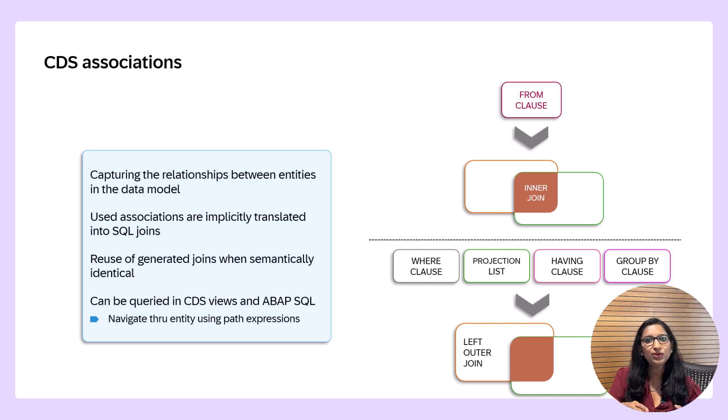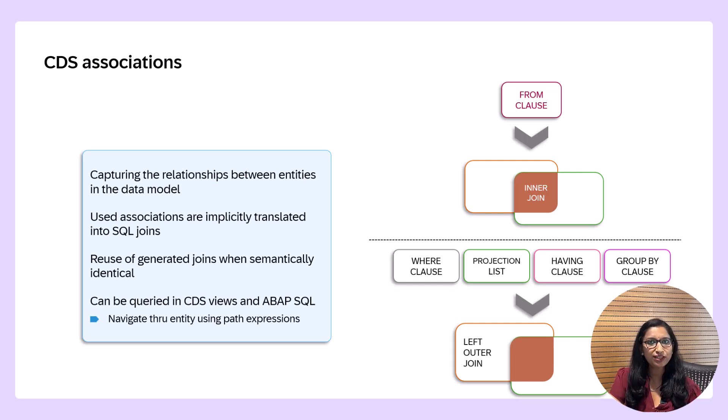The highlight of association is that only when the association is used, it implicitly translates into a SQL join. And this will improve the performance drastically. So now let's see how to define an association and consume them.